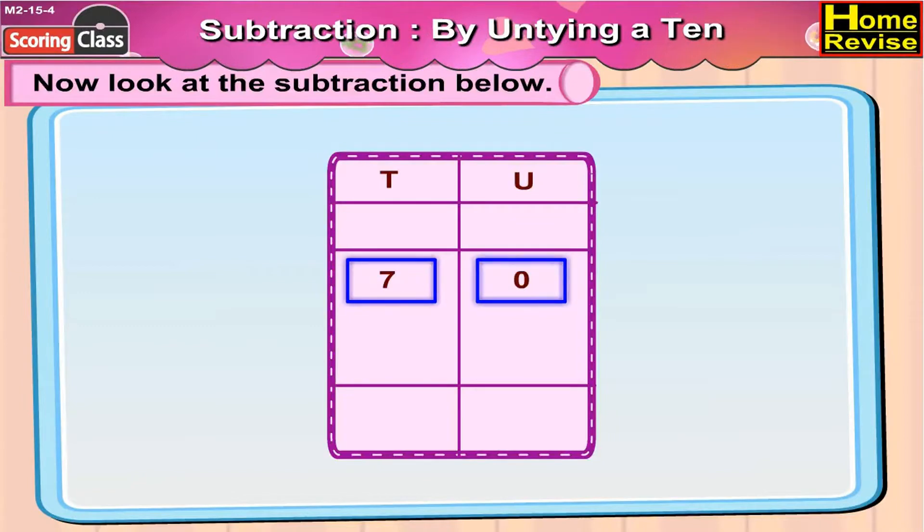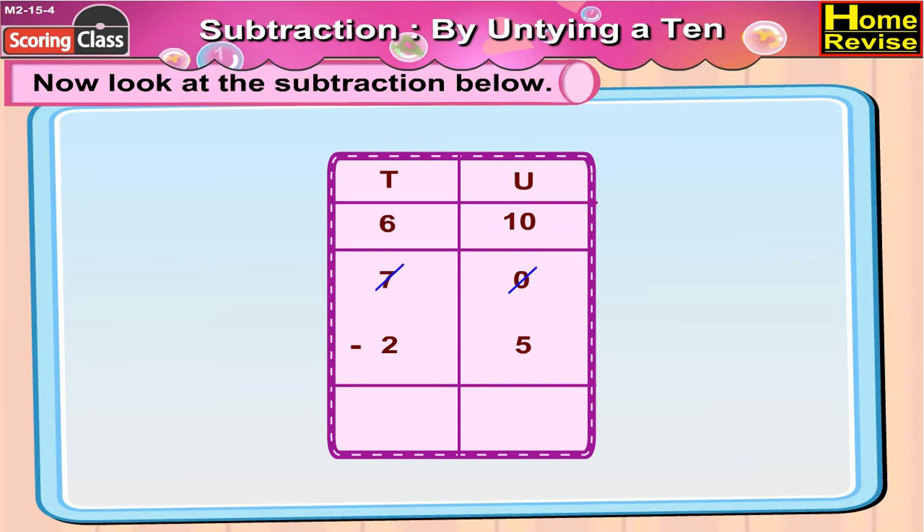7 tens 0 units minus 2 tens 5 units, that is 70 minus 25. Now if you notice in the units column, you cannot subtract 5 from 0, so we will untie 1 ten from 7 tens.